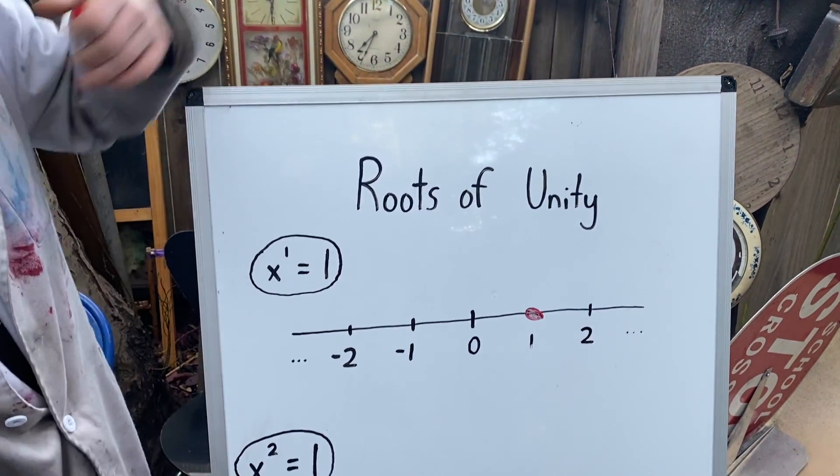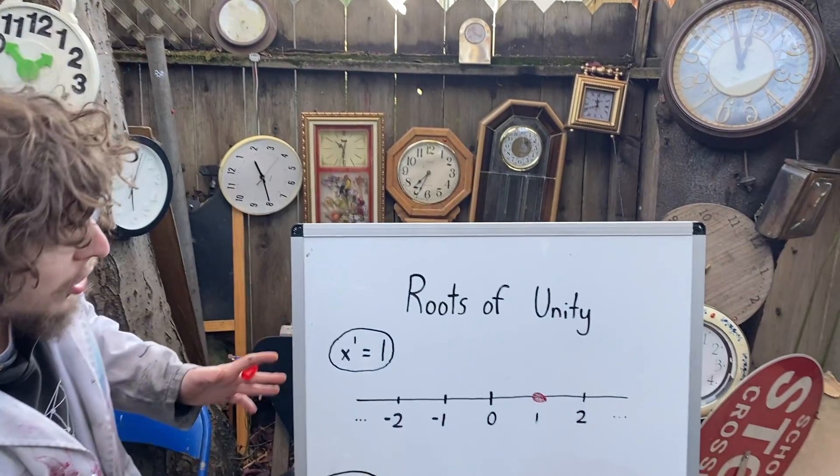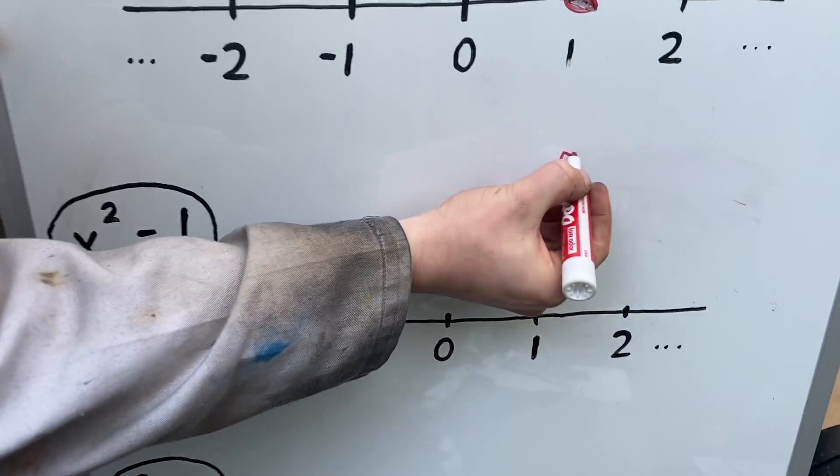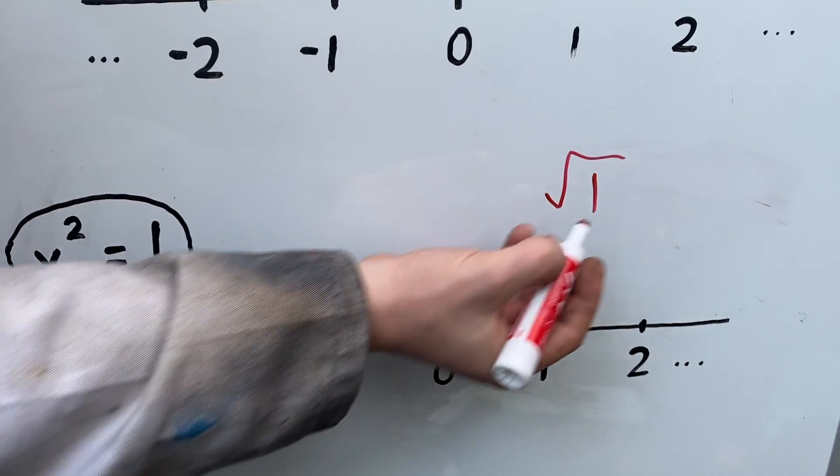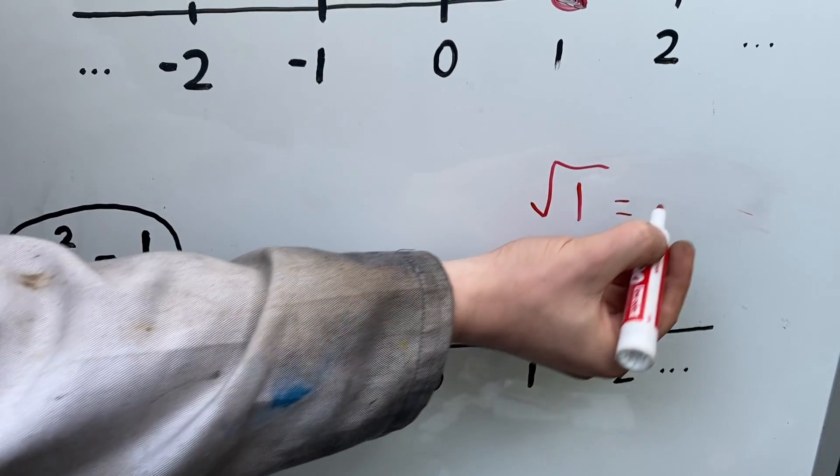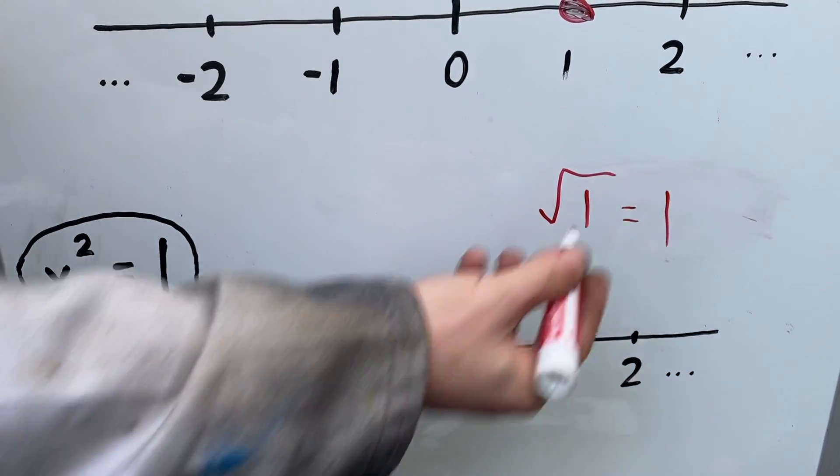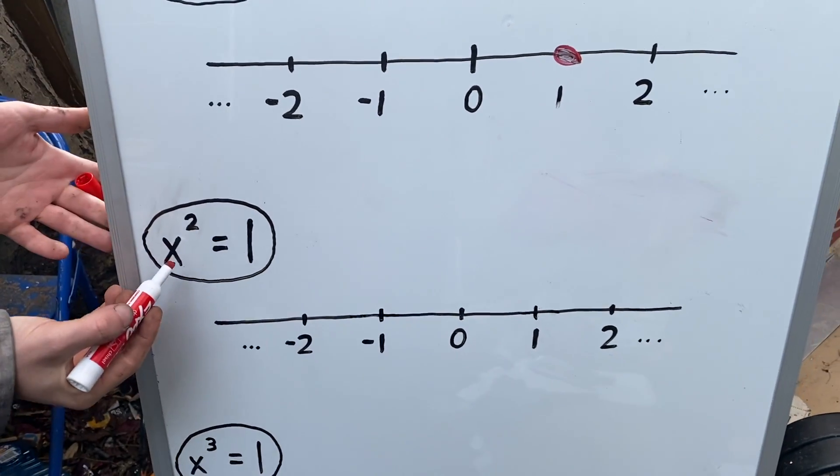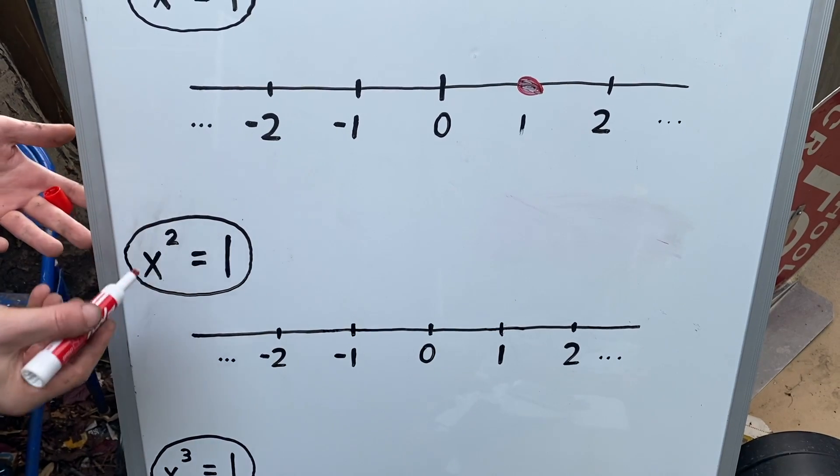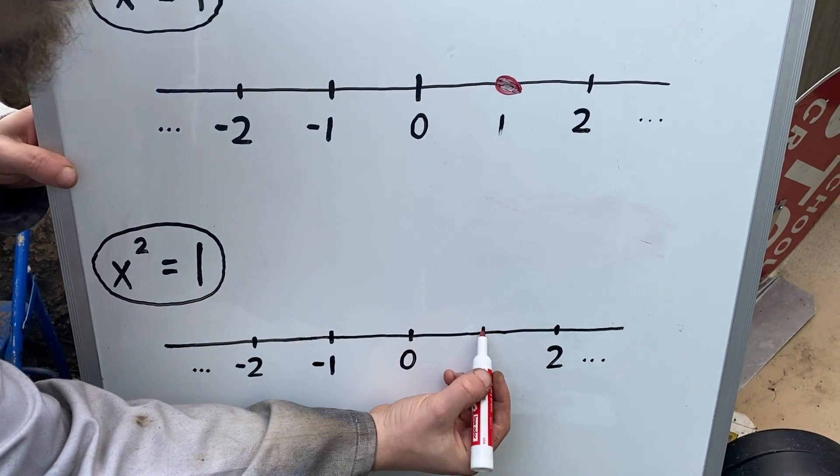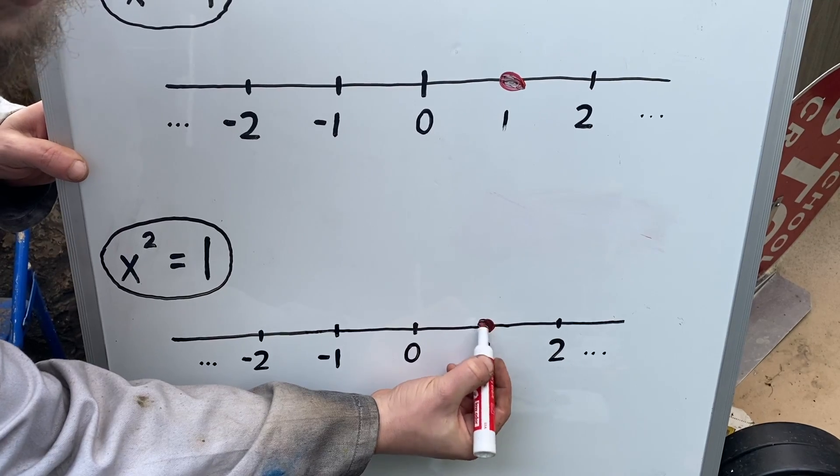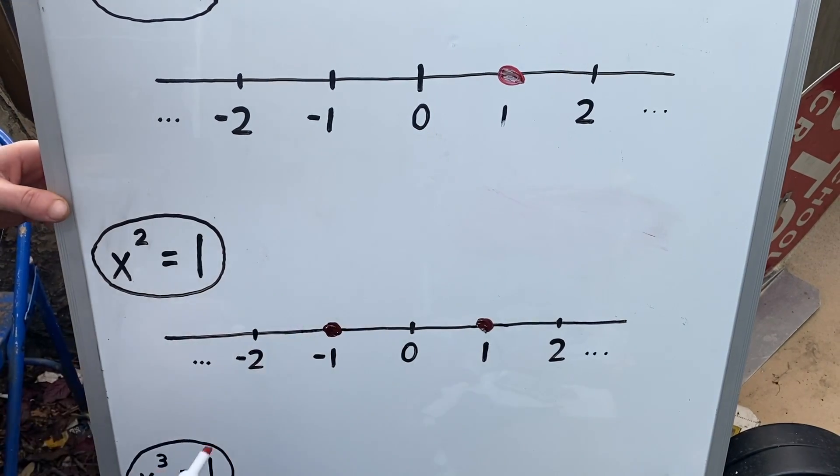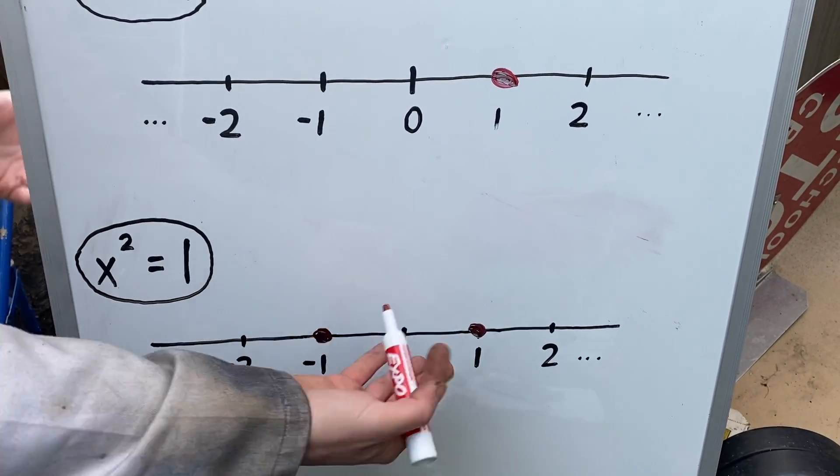But what about the second Roots? Now when I ask which numbers are the second Roots or square Roots of one, I'm actually not going to write it with that square root symbol because that radical symbol actually only refers to the principal square root, in this case the number positive one. And if I want to get both possible answers, I can write it more like which numbers x is x squared equal to one. And then we get the number one, which squared equals one, and the number negative one, which also if we square it gives us one. Both of those are the second Roots of Unity.